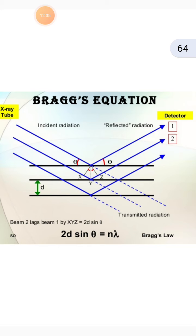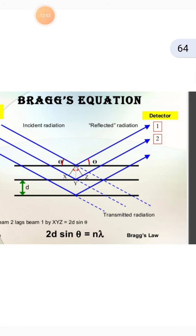W.L. Bragg proposed this equation and process around 1913, and the equation was named after him as Bragg's equation. This is an important topic and an important question in this chapter. Draw this diagram well. All slides shown are available in PDF form in your WhatsApp group. Do your work on time. Thank you very much.